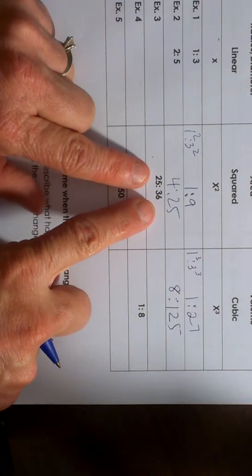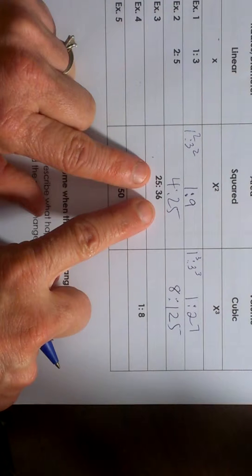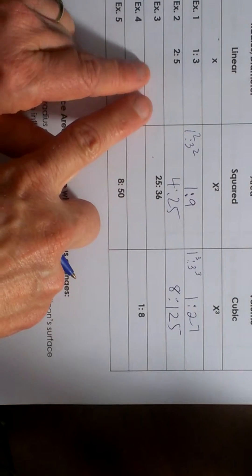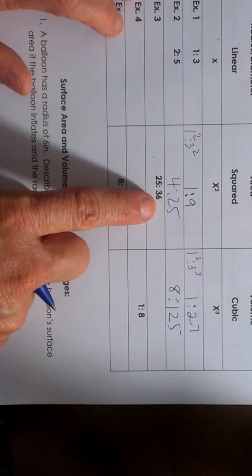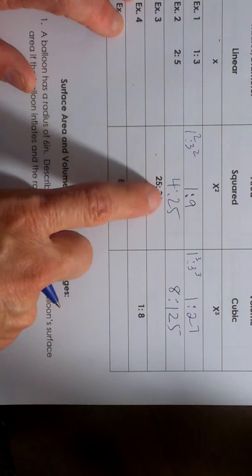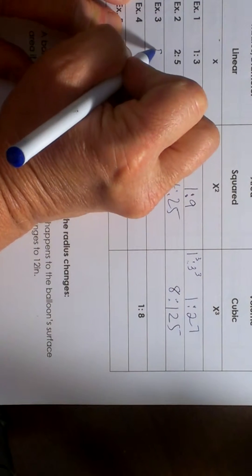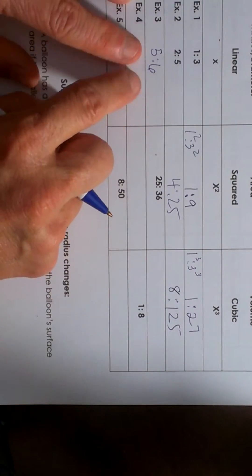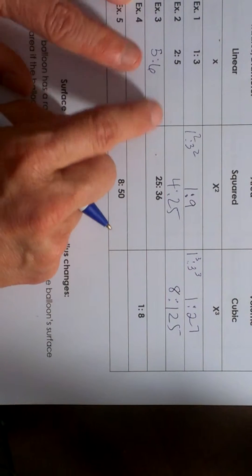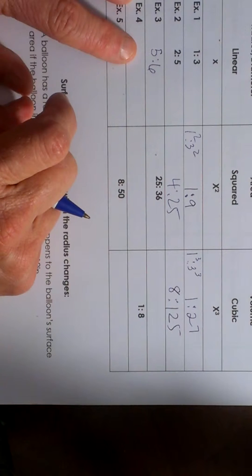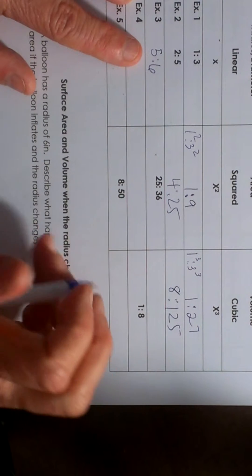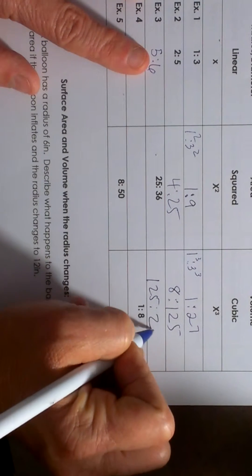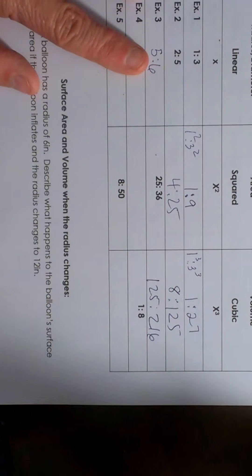What happens if we're given the area relationship and need to find the linear and volume relationships? We always have to work back and compare the linears first. For an area of twenty-five to thirty-six, since that's an area, we would take the square root. Taking the square root gives us a five to six relationship — that's the linear relationship of the radius and diameter. One might be five and the other six, or ten and twelve, as long as that ratio is five to six. Now what happens to the volumes? Five cubed is one twenty-five, and six cubed is two sixteen. So that would be the ratio of the volumes.